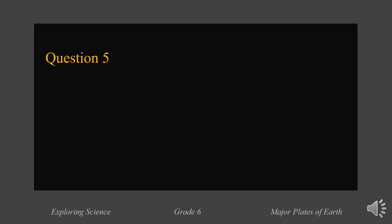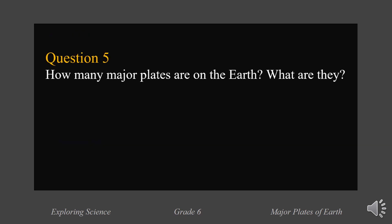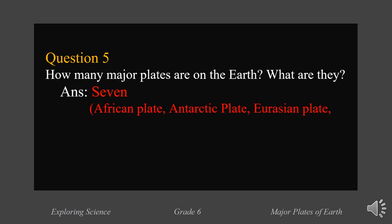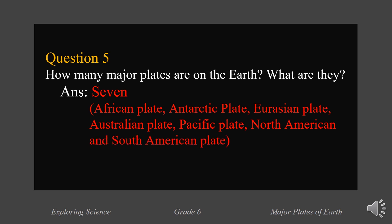Question number five: how many major plates are on the Earth? What are they? Seven — and they are the African plate, Antarctic plate, Eurasian plate, Australian plate, Pacific plate, North American plate, and South American plate. Excellent, you have got it right.